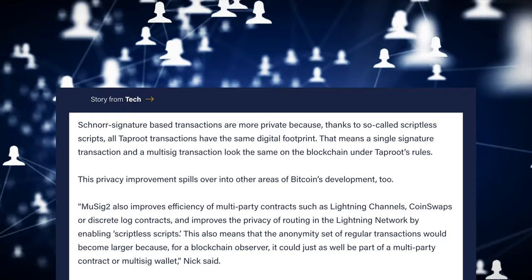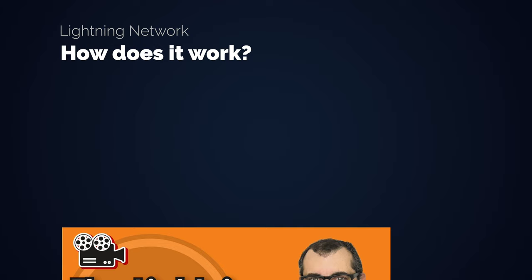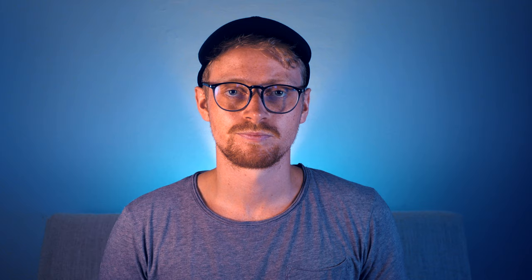Through the Taproot upgrade in November, even the settlement on the blockchain will have a huge privacy gain, because a multisig transaction from a closing Lightning channel will look the same as a regular transaction. This also shows how Lightning is non-custodial — it's just a multisig address with no one else in charge. And it already makes one thing clear: the Lightning network becomes way more useful the more nodes are involved. If you want to dig deeper into how the protocol works, I can highly recommend Andreas Antonopoulos' YouTube presentation 'A Technical Introduction to the Lightning Network at WeAreDevelopers 2020'.